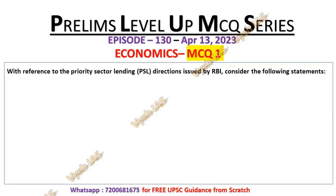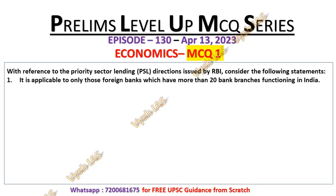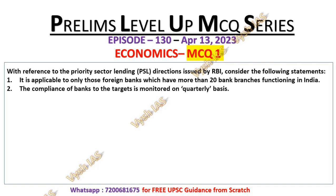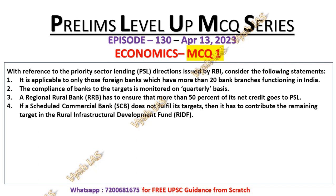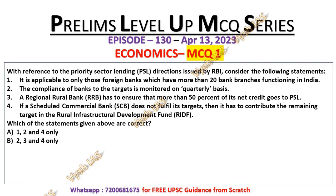Today's MCQ number 1: With reference to priority sector lending directions issued by RBI, consider the following statements. Statement 1: It is applicable to only those foreign banks which have more than 20 bank branches functioning in India. Statement 2: The compliance of banks to the targets is monitored on a quarterly basis. Statement 3: A regional rural bank has to ensure that more than 50% of its net credit goes to PSL, that is priority sector lending. Statement 4: If a scheduled commercial bank does not fulfill its target, then it has to contribute the remaining target in Rural Infrastructure Development Fund. Identify the correct statements. Options: A) 1, 2 and 4 only; B) 2, 3 and 4 only; C) 1, 2 and 3 only; D) 3 and 4 only.